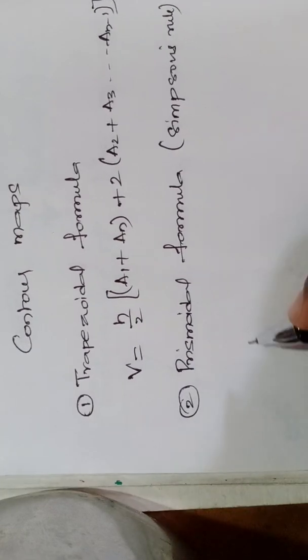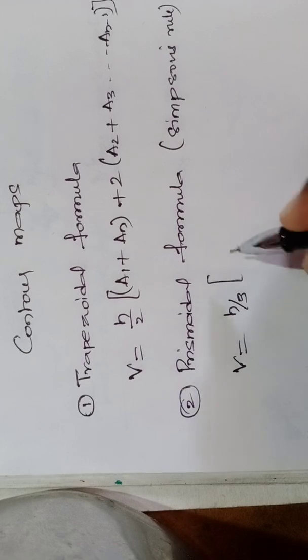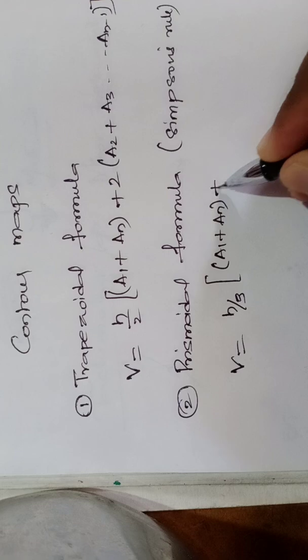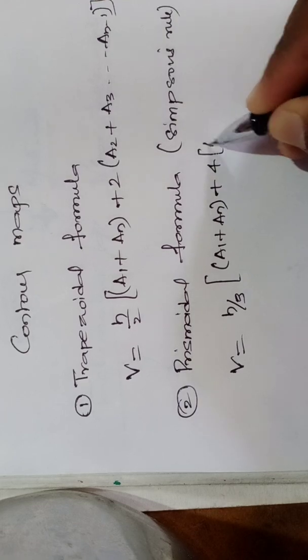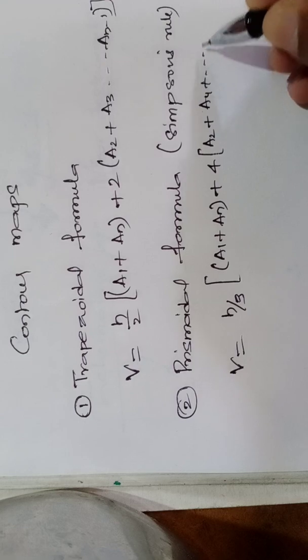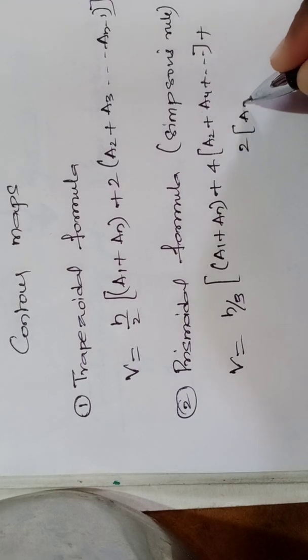When I come to prismoidal, the formula is h by 3, times first area plus last area, plus four times of even areas, plus two times of odd areas.